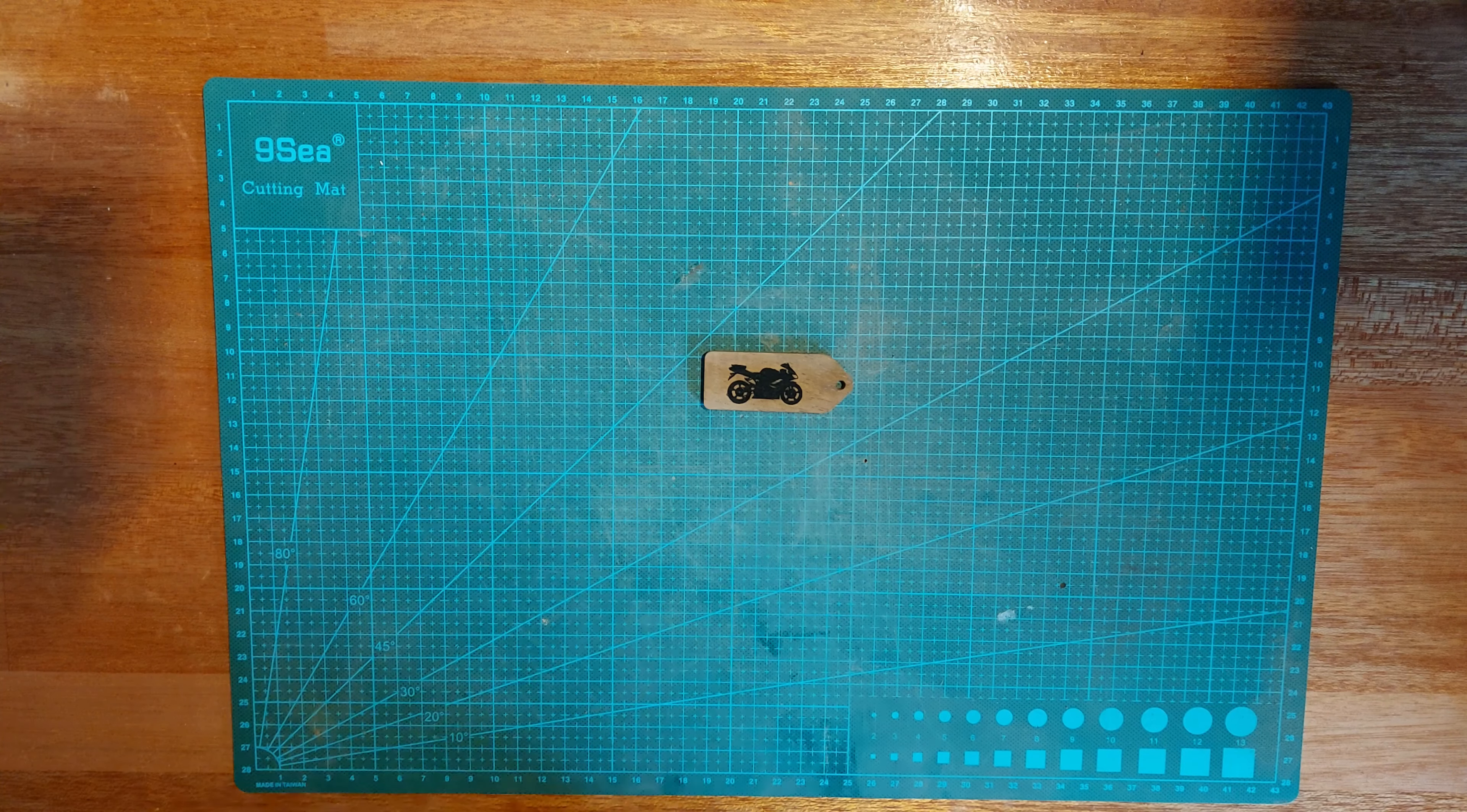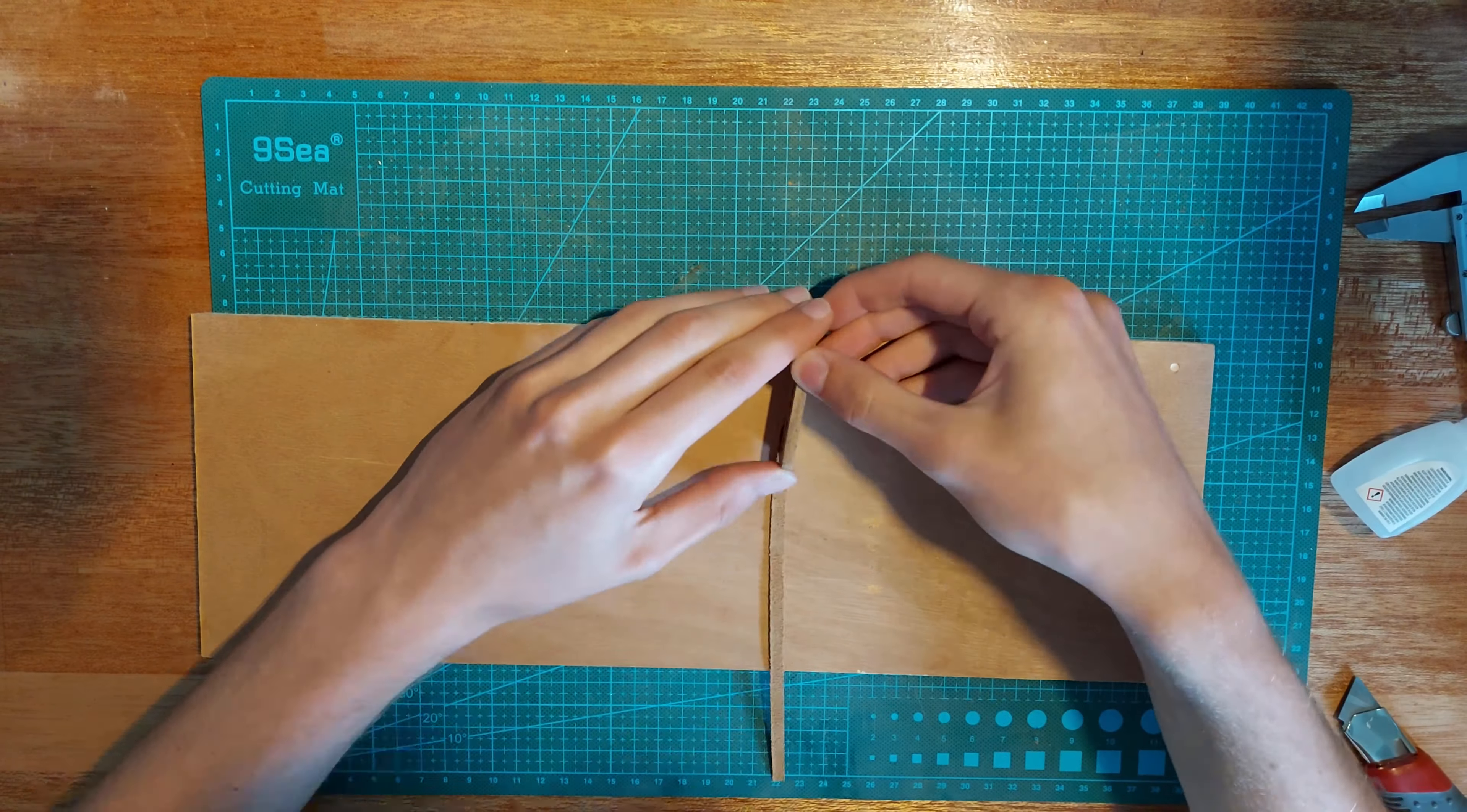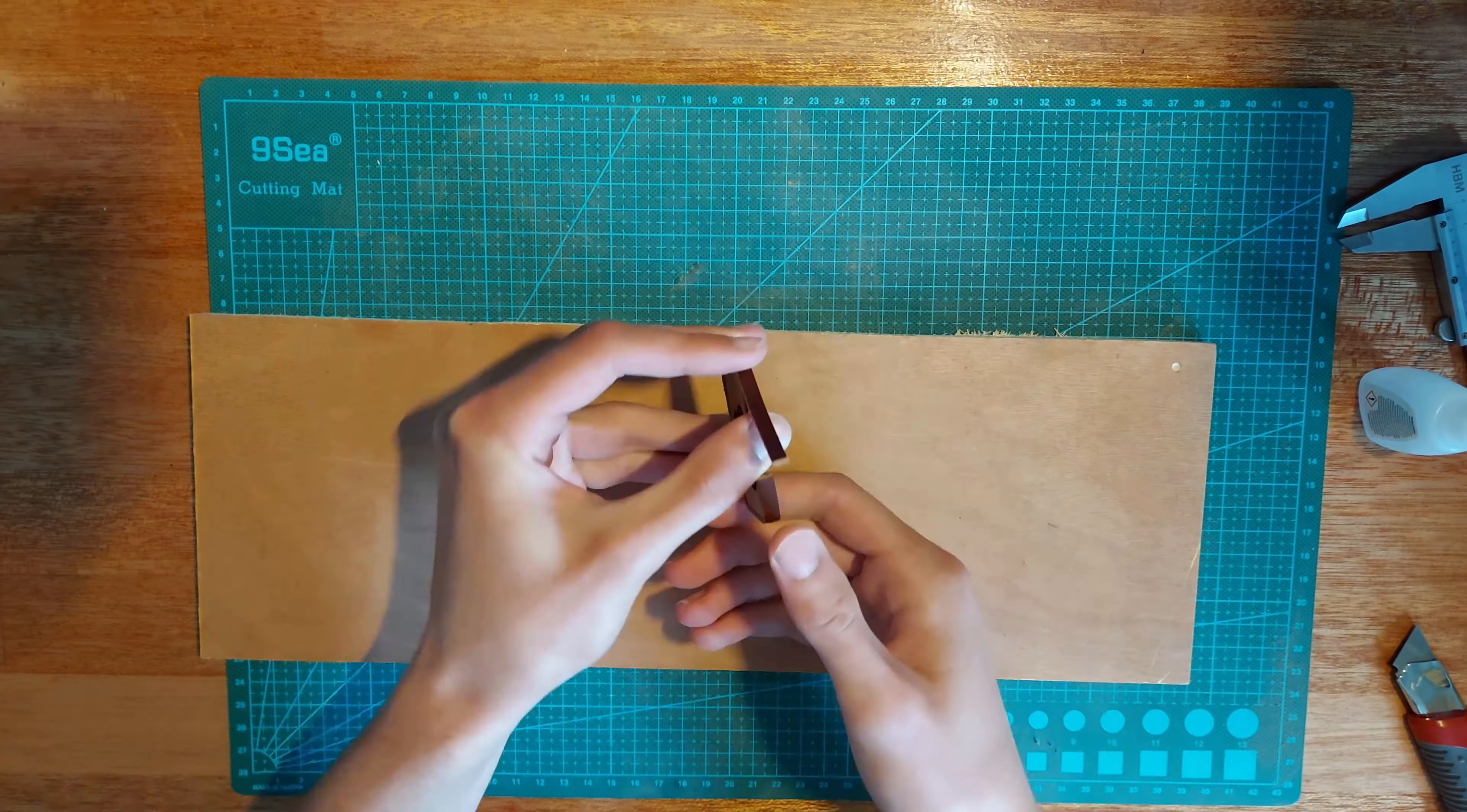To finish the piece off, I wanted to wrap it with a piece of leather. I cut off a piece and glued it on carefully using super glue. Luckily, any spills on the wood or leather would be masked by the final oil finish.